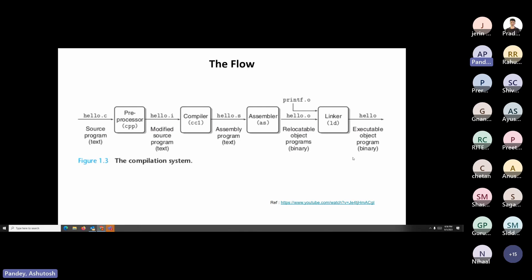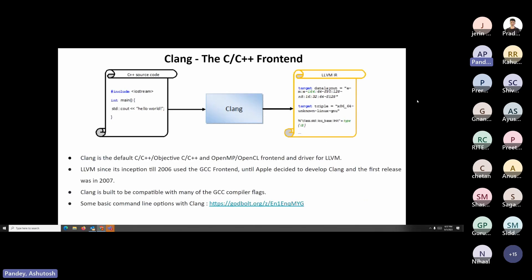LLVM is used multiple times in the pipeline of compilation. If you take a C or C++ file, you pre-process it, the compiler converts it into an intermediate form, then you have assembly where the assembler is invoked, then object files. The object files are linked together by a linker and then loaded into memory by a loader and finally executed. Let's get started with Clang.